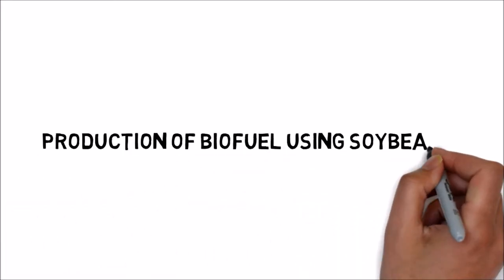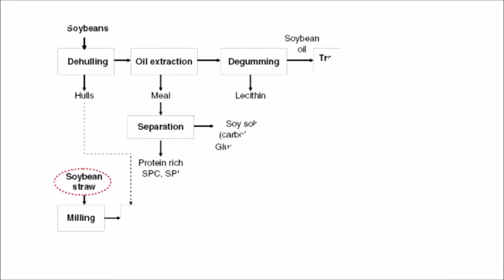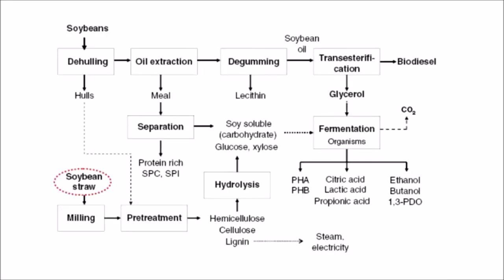Production of biofuel using soybeans. First of all de-hulling of soybeans. De-hulling, or decortication, is the way toward evacuating the body of a seed and can be material to something other than soybeans. It is done as maker wishes to diminish the last fiber content at last item.